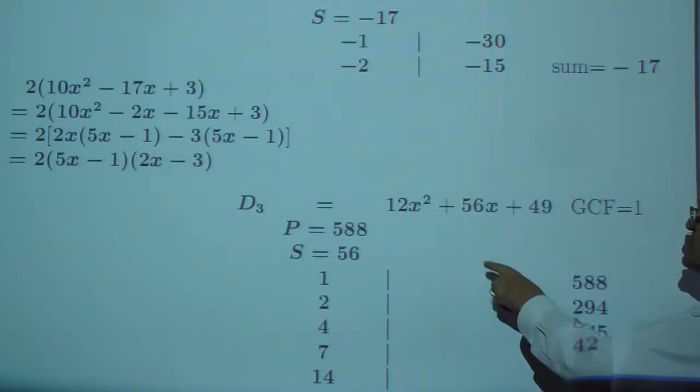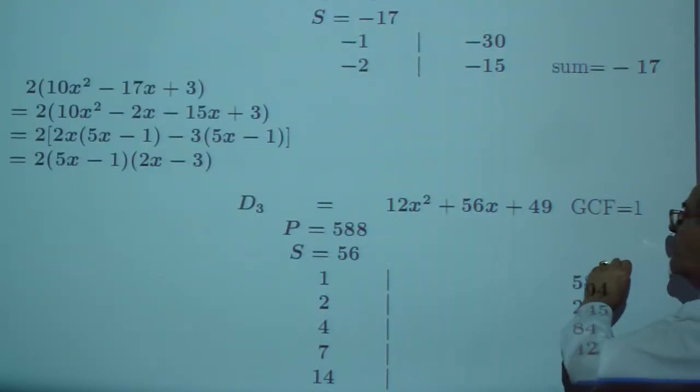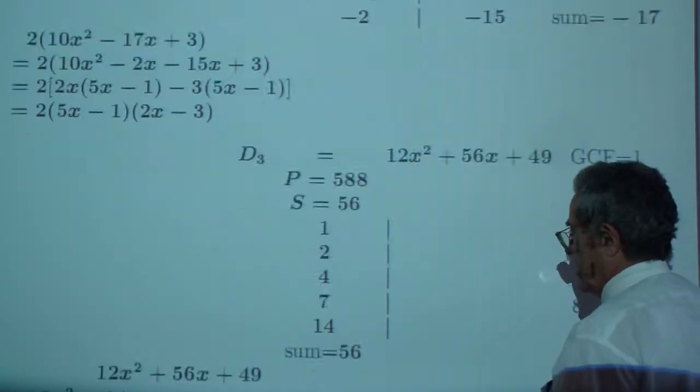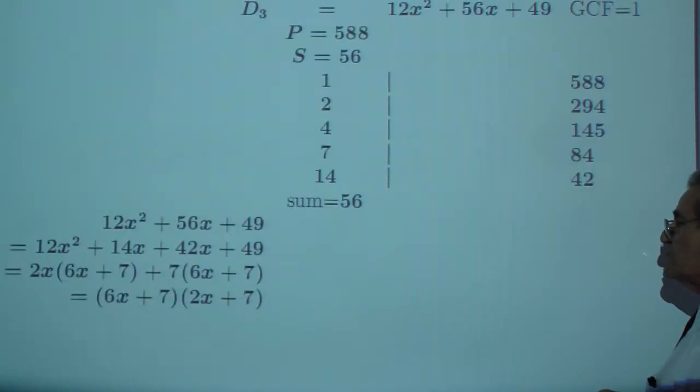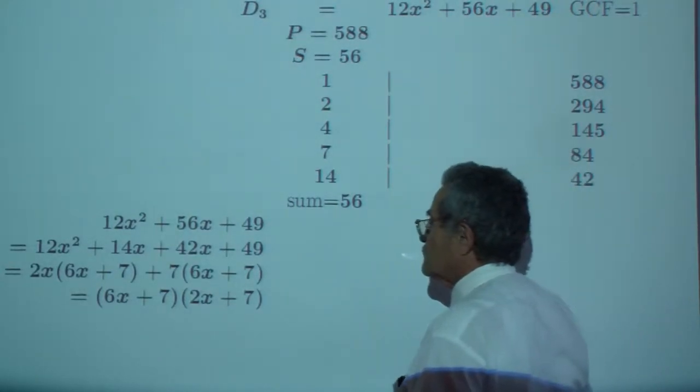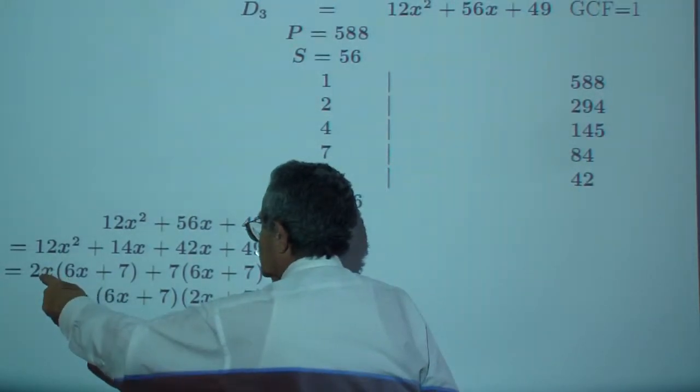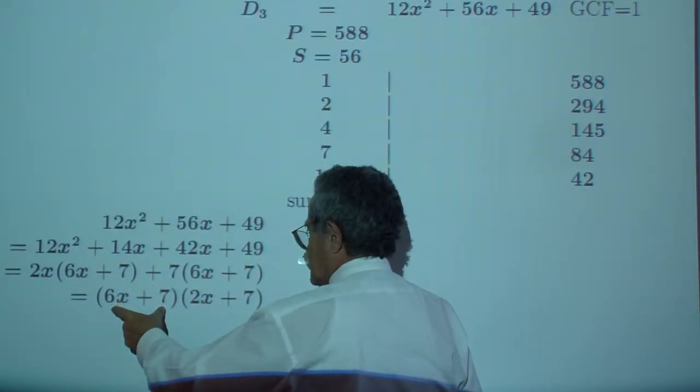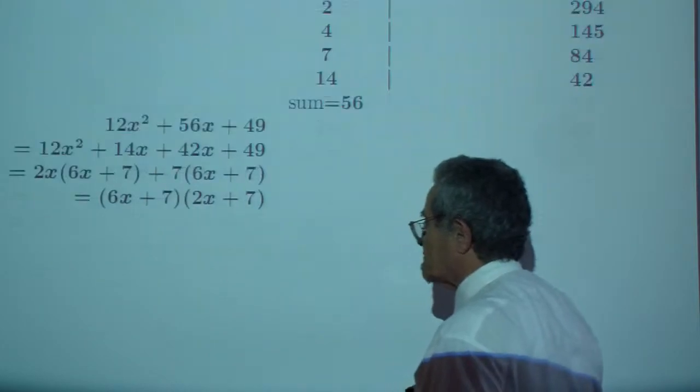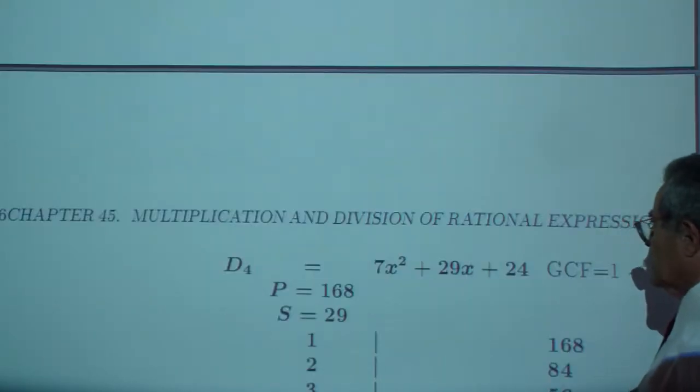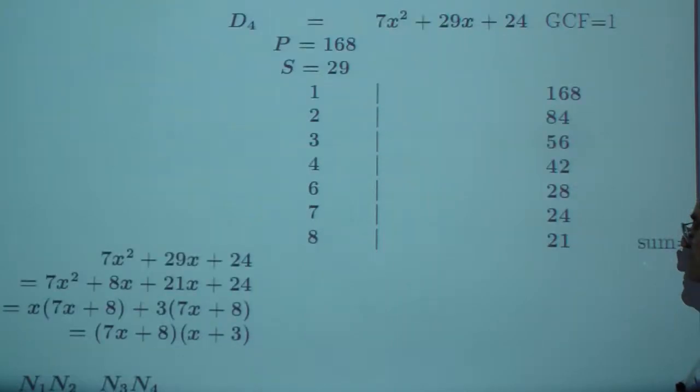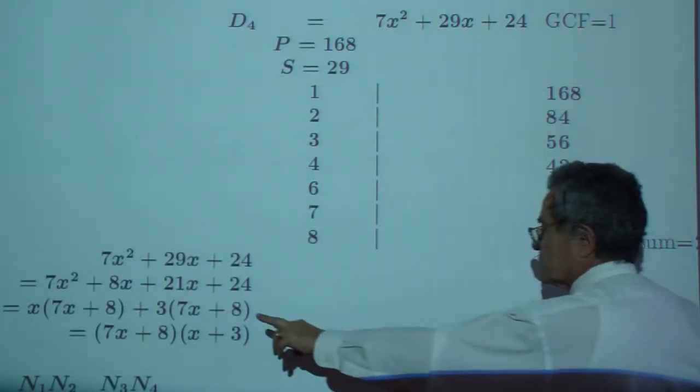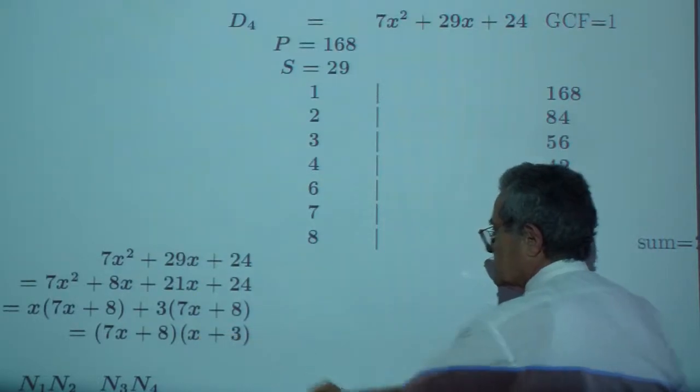And for D sub 3, greatest common factor 1. Product sum, magic numbers 14 and 42. Factor, you have 6x plus 7 and you have 2x plus 7. And D sub 4, greatest common factor 1, magic numbers 8 and 21. Product, 7x plus 8, x plus 3.